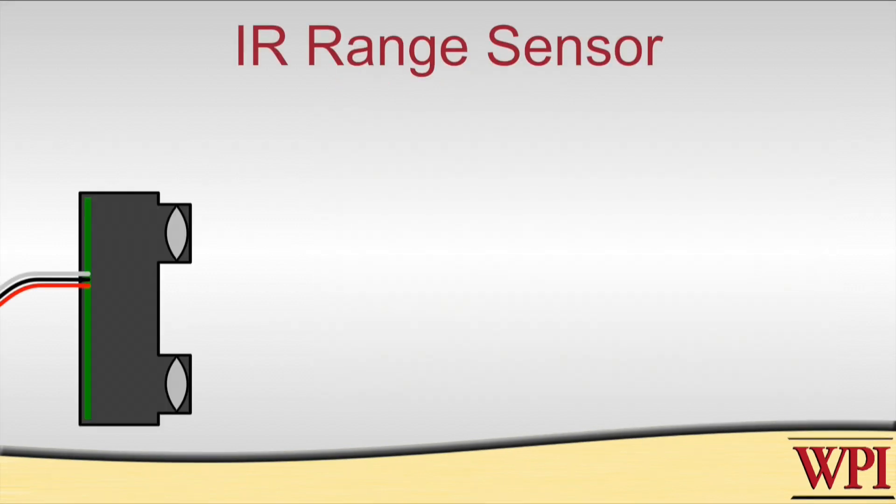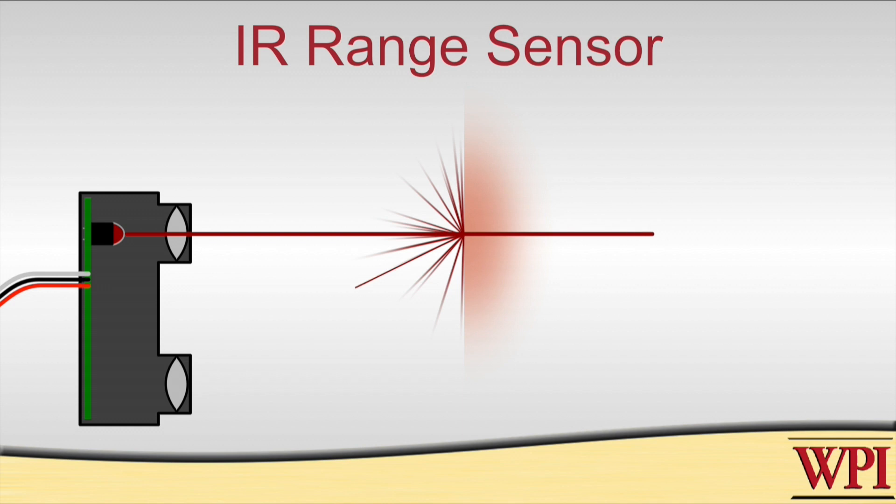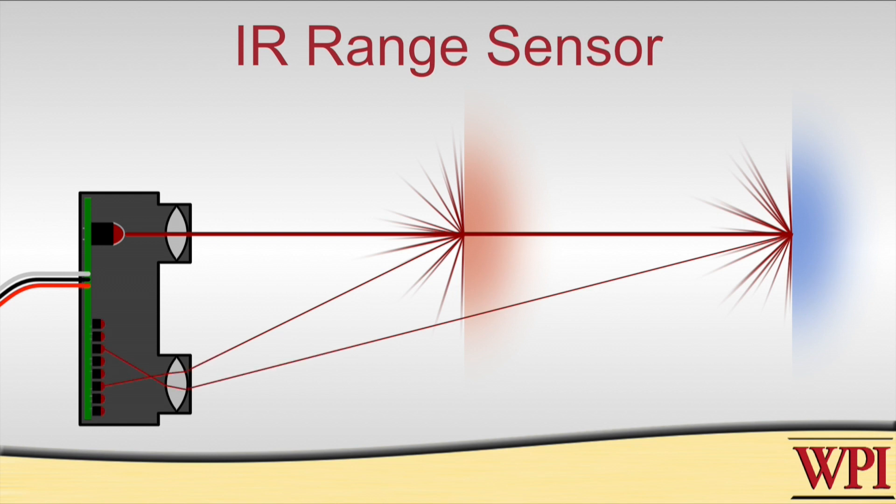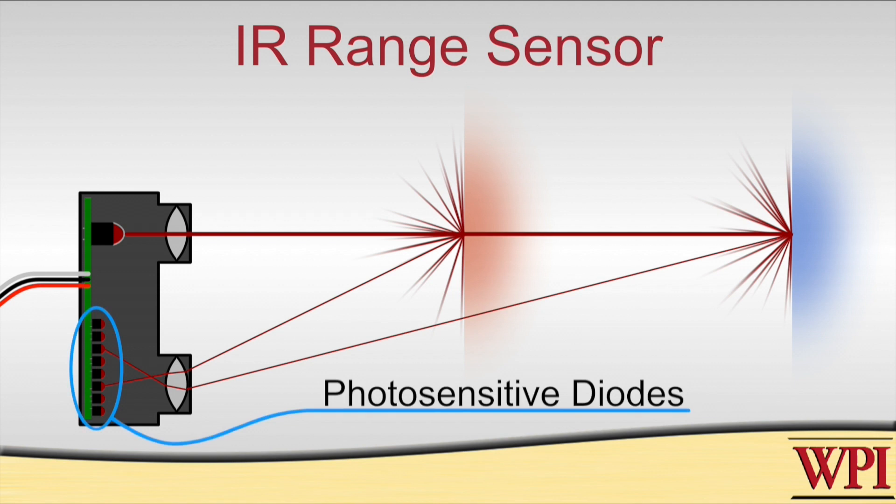The sensor works by outputting a beam of infrared light through some optics from one side. That beam then bounces off some object that could be at a varying distance away. Depending on how far away it is, the return beam arrives back. It falls on a linear array of photosensitive diodes and where that beam focuses on that array determines the distance to the object.